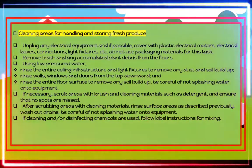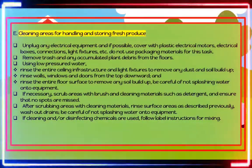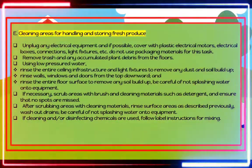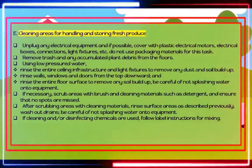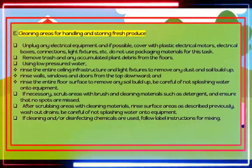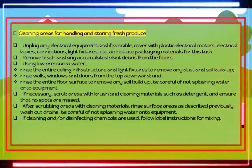Cleaning areas for handling and storing fresh produce: First, unplug any electrical equipment and if possible cover electrical motors, boxes, connections, and light fixtures with plastic. Second, remove trash and accumulated plant debris from floors. Third, using low pressure water, rinse the entire ceiling, infrastructure, light fixtures, walls, windows, and doors from top downward, and rinse the entire floor surface; be careful not to splash water onto equipment. Fourth, if necessary, scrub areas with brush and cleaning materials such as detergent, ensuring no spots are missed. Fifth, after scrubbing, rinse surface areas and wash out drains. Sixth, if disinfecting chemicals are used, follow label instructions for mixing.